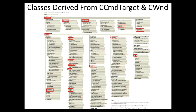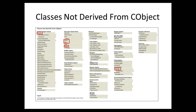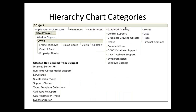CObject, CCommandTarget, and CWnd account for most MFC classes. However, there are also classes not derived from CObject. Important ones include: CCmdUI, used to enable or disable a menu item or toolbar item; data types like CPoint for a point, CRect for rectangles, CTime for time, and CString for string support. These are all classes not derived from CObject.